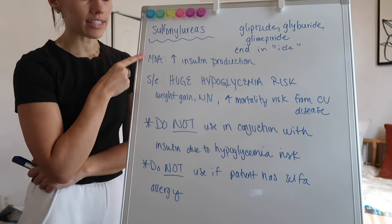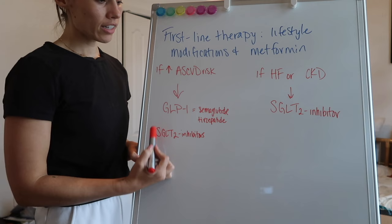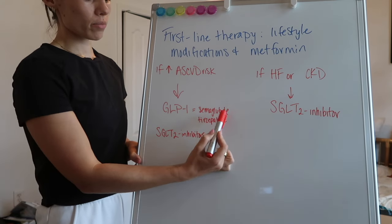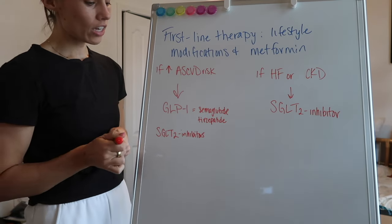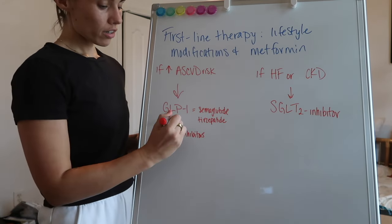You can literally Google ASCVD risk, and there is a calculator that asks the patient's age, gender, race, blood pressure, if they're on blood pressure medication, if they're on diabetic medication, if they smoke — and it will calculate a risk for you. So if they have a high ASCVD risk, which would be anything above 7.5% — considered high — I would go with either a GLP-1: those are your Semaglutides, your Tirzepatides, anything ending in '-tide,' or your SGLT-2 inhibitors, which are anything that ends in '-gliflozin': Invokana, Farxiga, Jardiance.